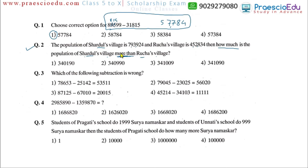The population of Shardul's village is 7,93,924 and Ruchaz's village is 4,52,834. How much is the population of Shardul's village more than Ruchaz's village? 'More than' means we have to find the difference between Shardul's village and Ruchaz's village. Word problems give statements and information, and we have to find out what is asked. Keywords like 'more than,' 'take out,' and 'added' describe whether to add or subtract.